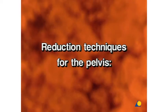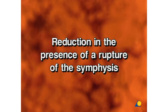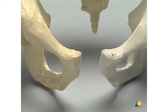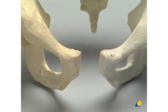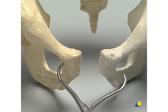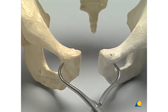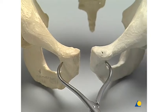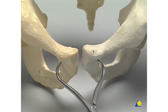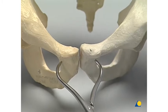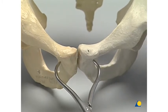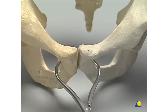Reduction techniques for the pelvis. Reduction in the presence of a rupture of the symphysis. In the presence of a rupture of the symphysis with a malalignment of the external rotation of one hemipelvis, reduction can be achieved with a pointed reduction forceps. The tips of the forceps are inserted into either the ischiopubic foramen or the bone of the pubic body. Compression of the symphysis and fine adjustment to a dislocation in the cranial or posterior direction are possible.